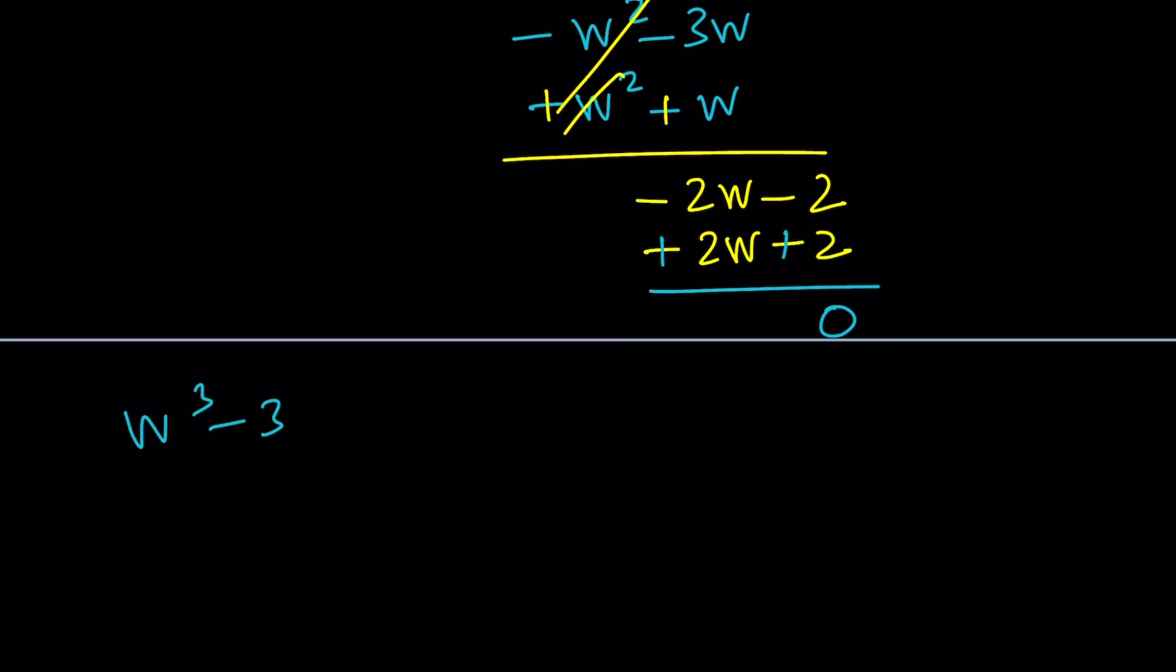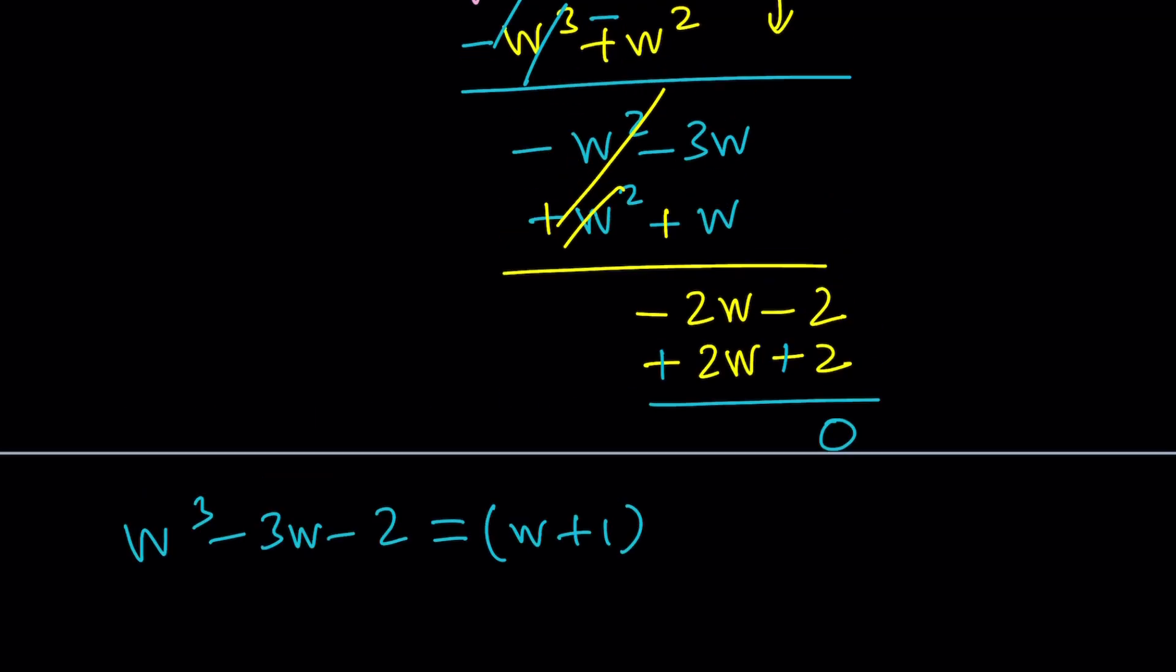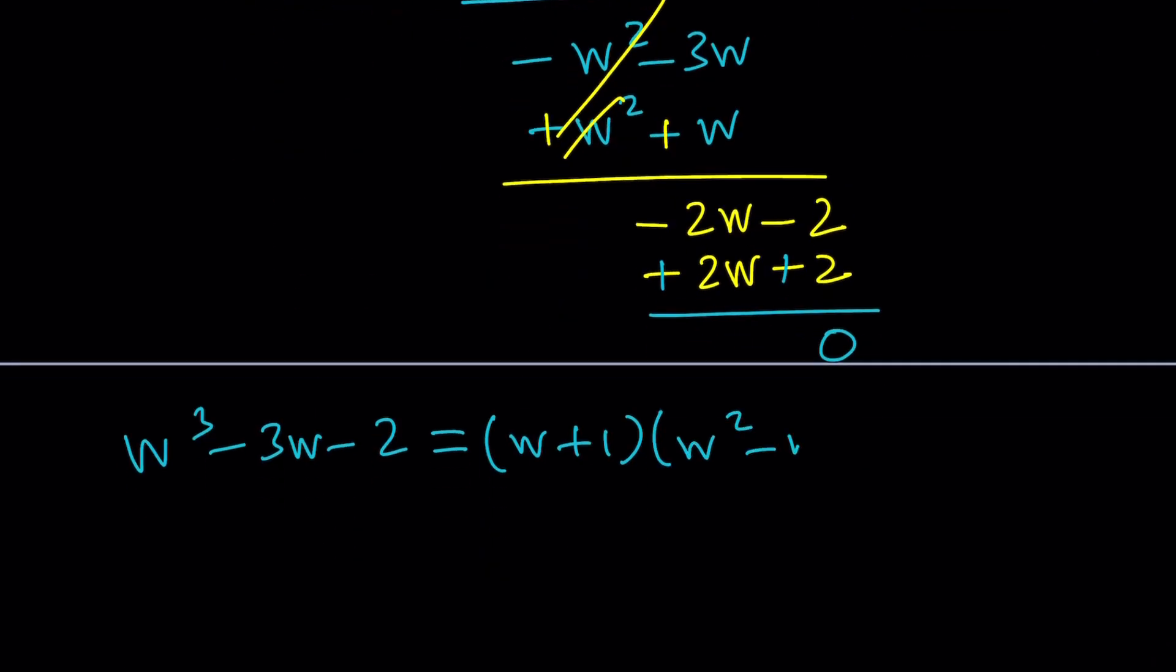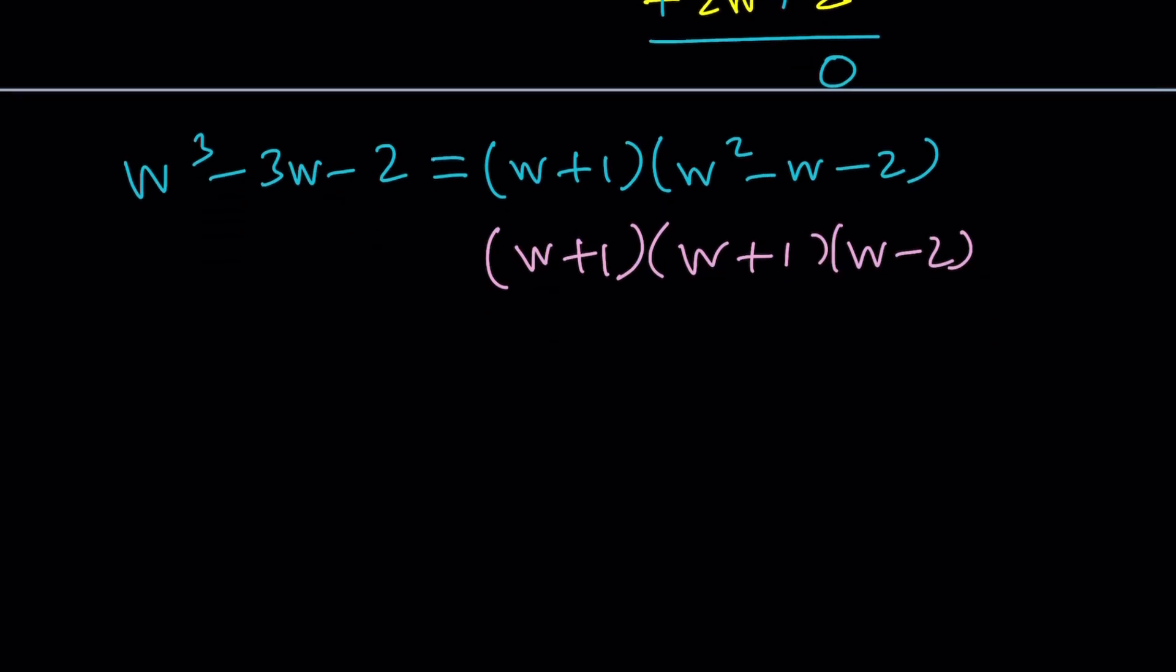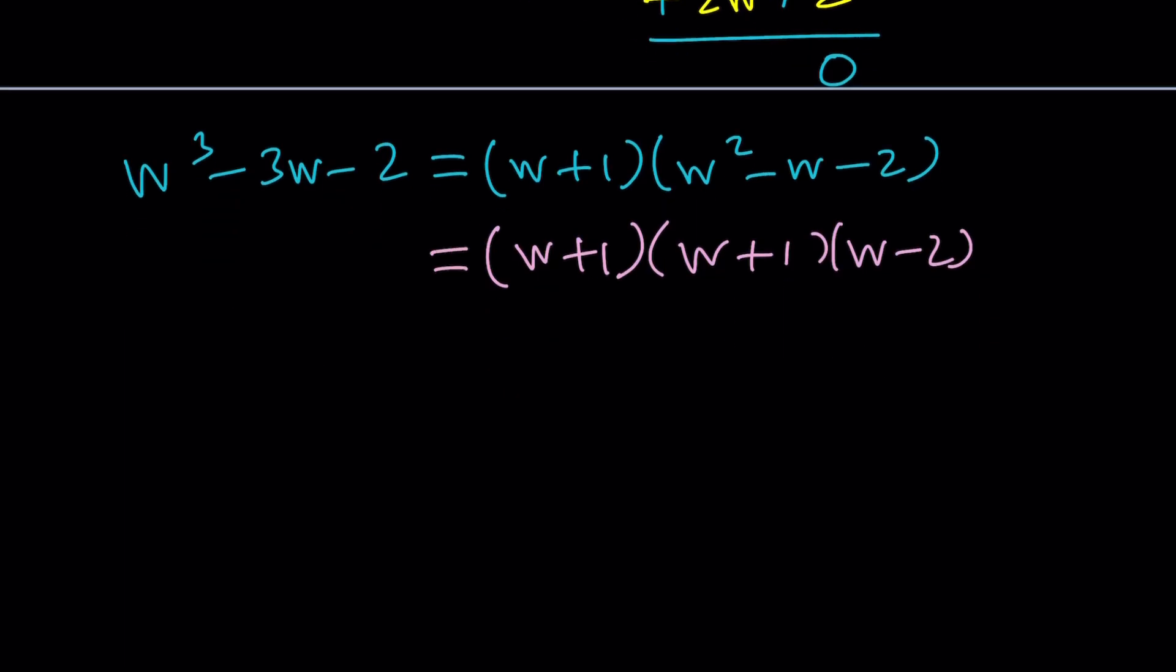Now, we were able to factor our expression into the following. W cubed minus 3w minus 2 equals w plus 1 times w squared minus w minus 2. Guess what? This quadratic is also factorable into w plus 1, w minus 2 by finding two numbers whose product is negative and whose sum is negative 1. We just did it today. We're using that skill again and again. This gives us a perfect square, which is perfect.